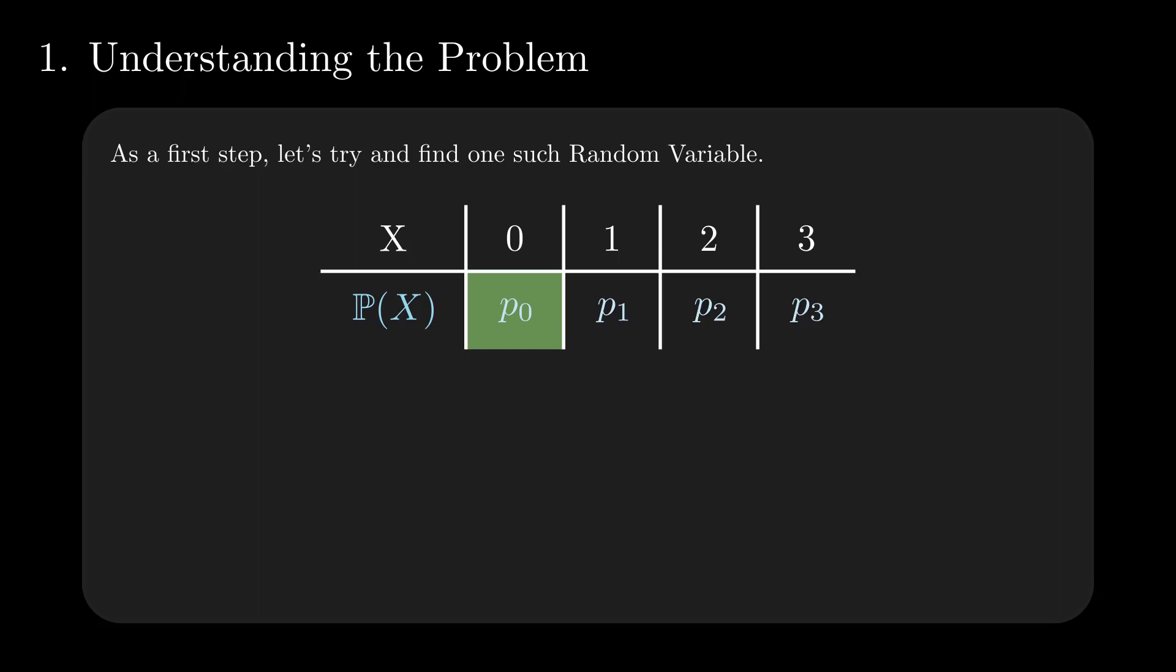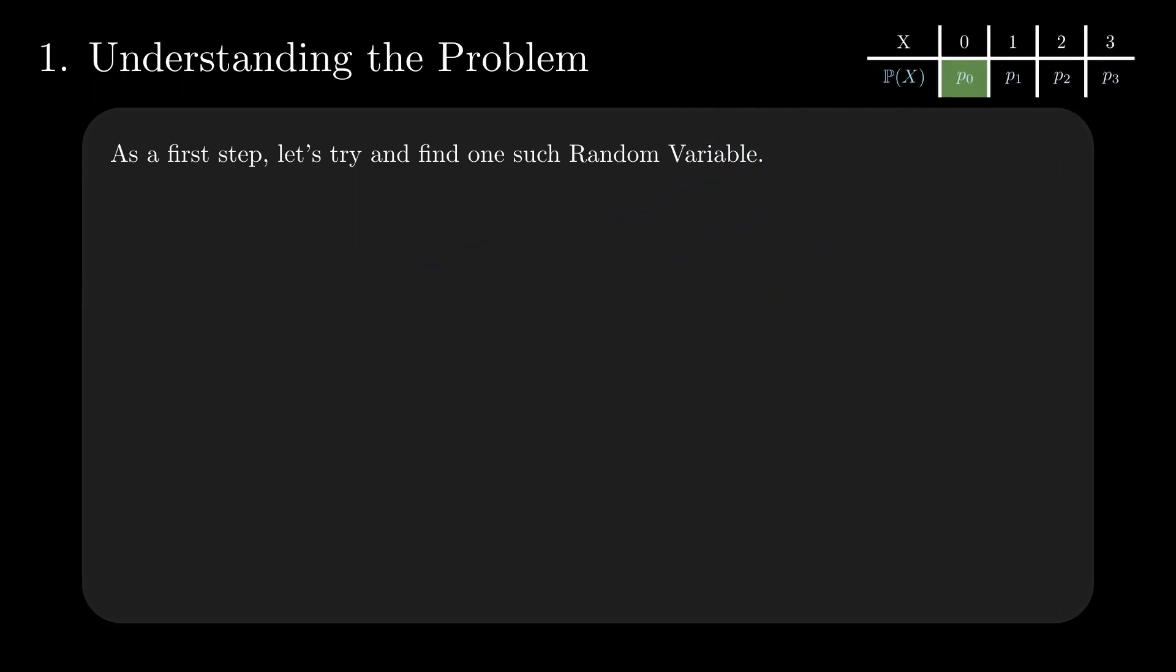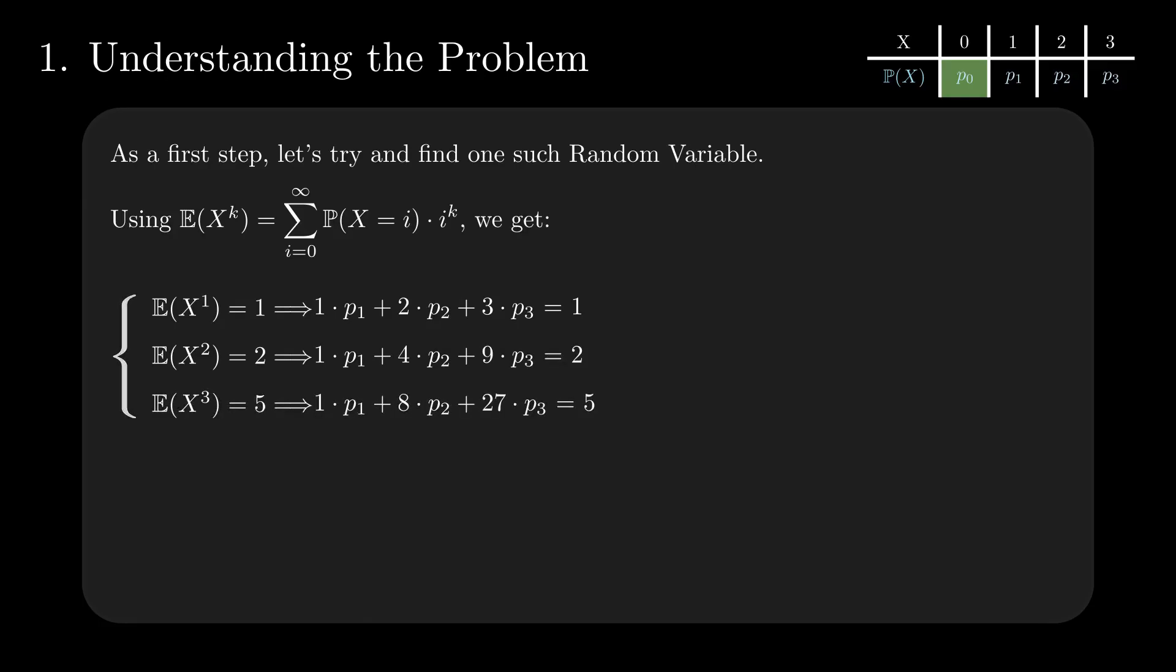Our focus now is on computing p0. We remind ourselves of the definition of the expectation of X to the power of k and apply it to the identity, the square, and the cube of X, equating them to the known values. It all translates into a system of three linear equations with three unknowns.